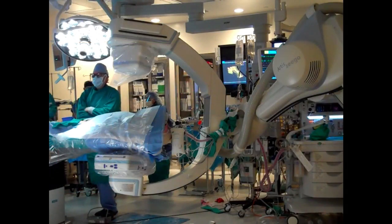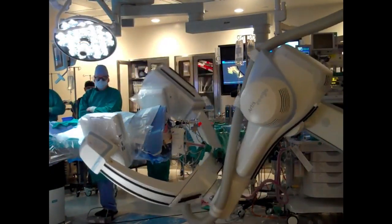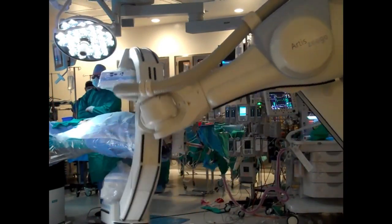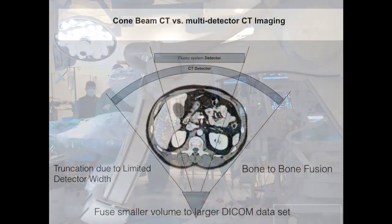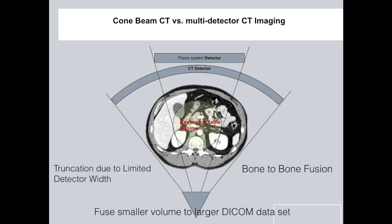The first step is acquisition of the cone beam CT. Think of the C-arm — in this case the Siemens Ziegel — as a large single plate CT detector. This rotation allows us to create a three-dimensional DICOM data set, shown here in this reconstructable volume. Think of this as a truncated data set, which is limited due to the size of the detector, but it does allow us to fuse that area on the previously acquired CT scan.